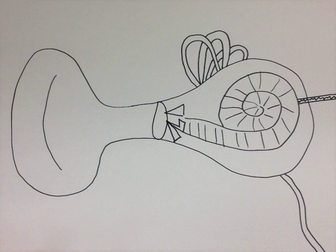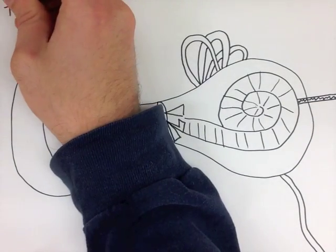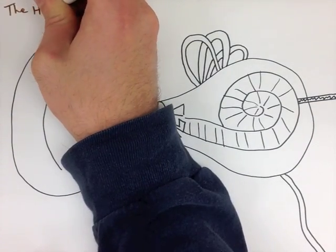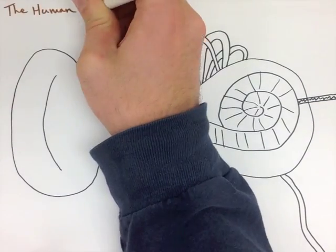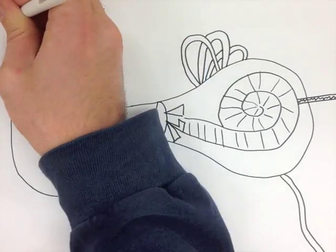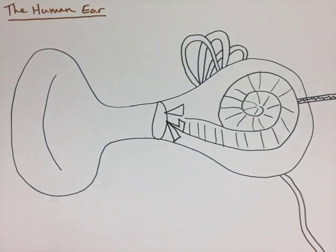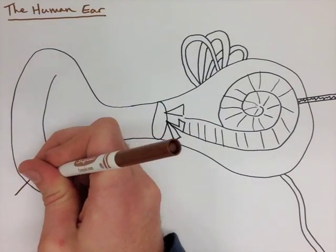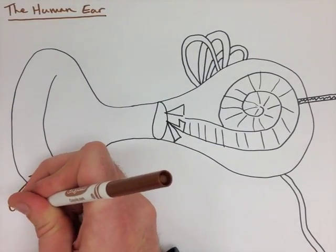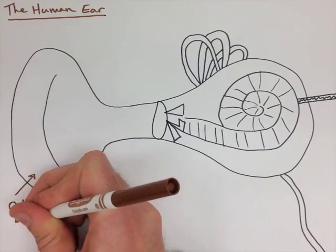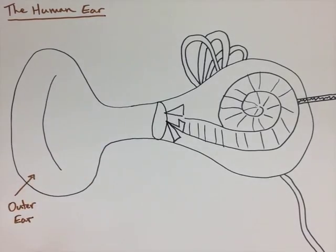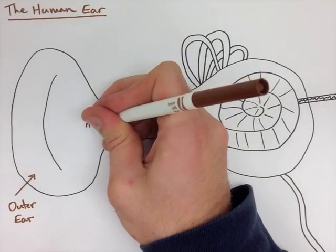To start out, you're going to want to draw a diagram something like shown. This is representing the human ear. To start with, we're going to look at the outer ear. The main part of this is the auditory canal.